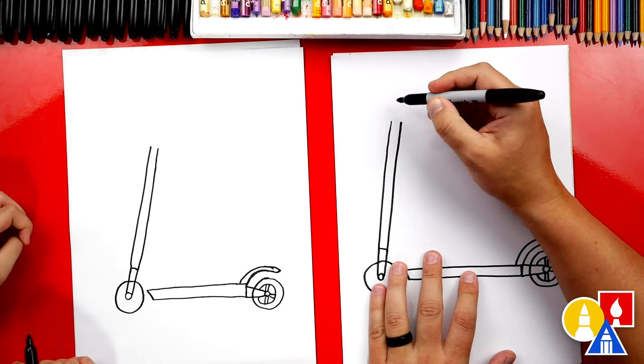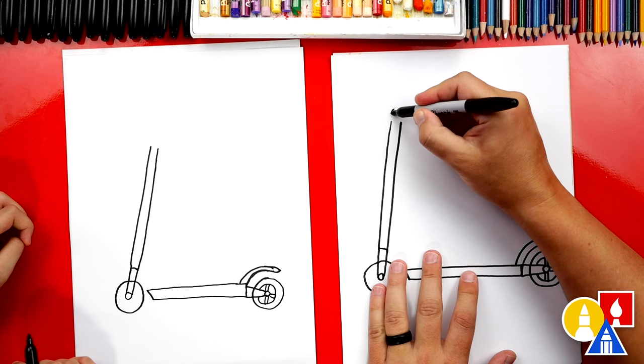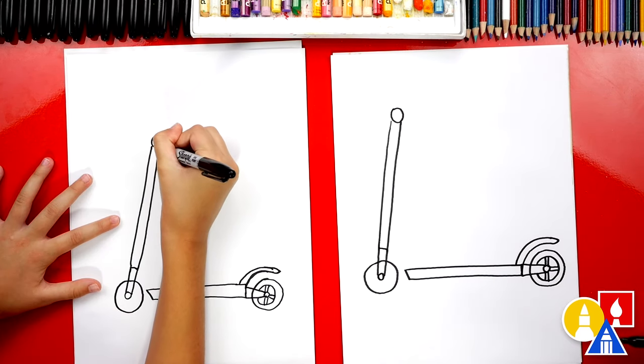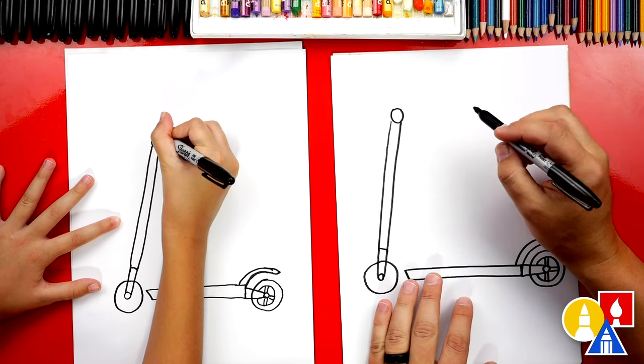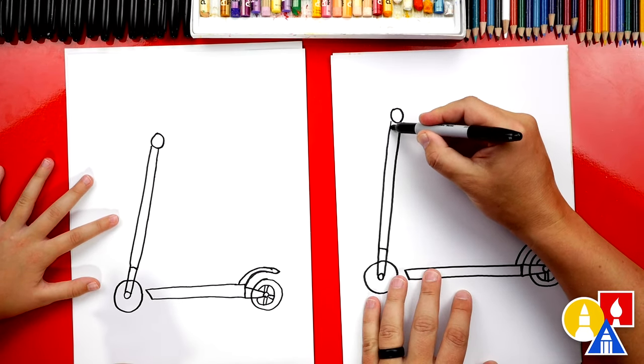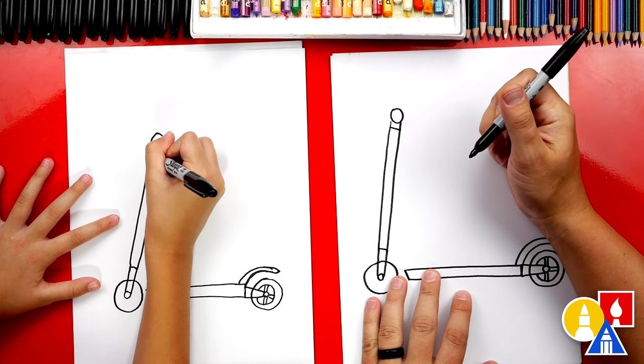Now let's draw the handle up here or the grip. The handle grip. We're gonna draw a circle at the top. Then let's also come down here and we'll draw a line, a short line across.